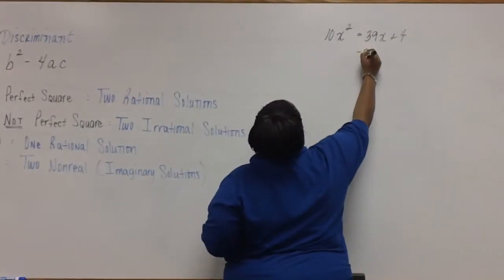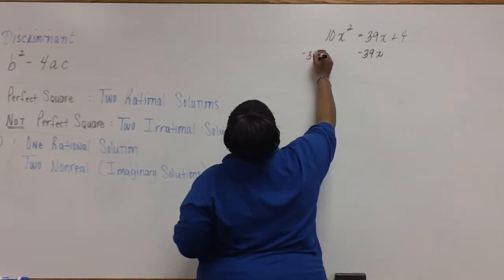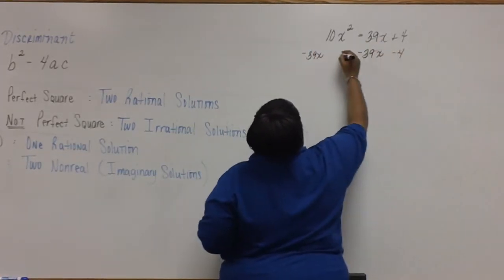To set it equal to zero, we'll need to subtract 39x from both sides. And we'll also need to subtract 4 from both sides.